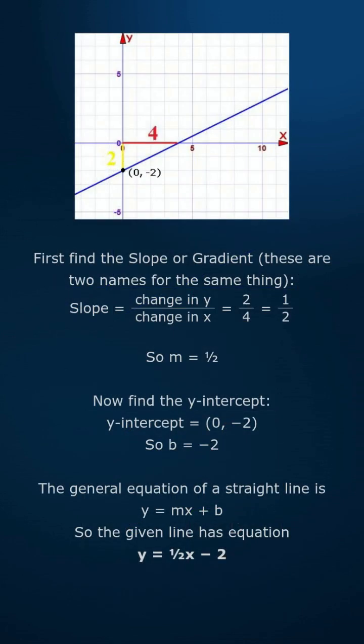First, find the slope or gradient. These are two names for the same thing. Slope equals change in y over change in x, equals 2 over 4, equals half. So m equals half.